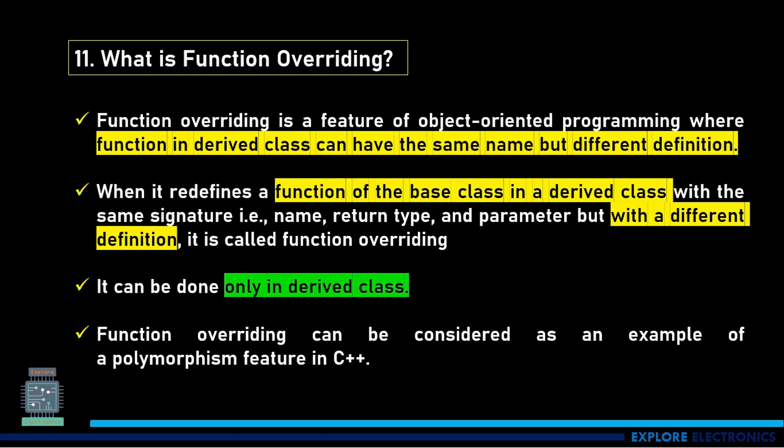In the previous question, function overloading can be done in derived class and base class, but function overriding can be done only in derived class. Function overriding can be considered as an example of polymorphism.